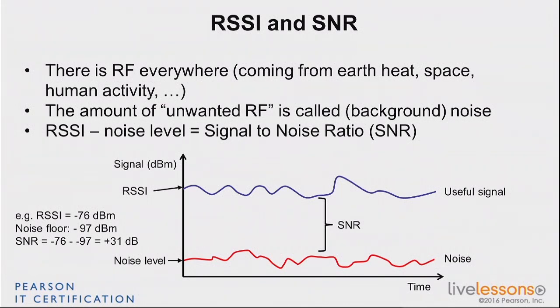Depending on what you're trying to achieve, that could be good or bad. Typically, 31 dB is very good. Something below 10 dB is typically a problem. A good condition is anything above 20 dB, so 30 dB is a pretty good number. That covers noise, but as you work in a Cisco environment, you will hear about noise and also about interference — and those are different.